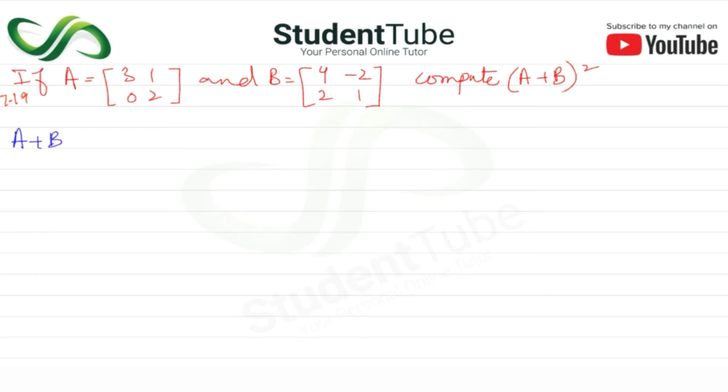So we will first find A plus B. A plus B equals [3, 1; 0, 2] plus [4, -2; 2, 1], which gives us 3 plus 4, 1 plus minus 2, 0 plus 2, 2 plus 1. So that's 7, minus 1, 2, and 3.